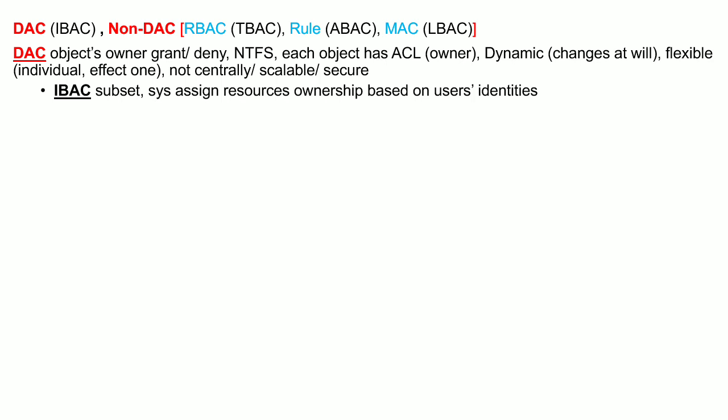In discretionary access control models, the owner of the object who created it has all the authority over that object to grant or deny access to another subject. This owner can be a user or a custodian. The Windows NTFS file system implements discretionary access control, where each object created by the owner has an access control list specific to that object.